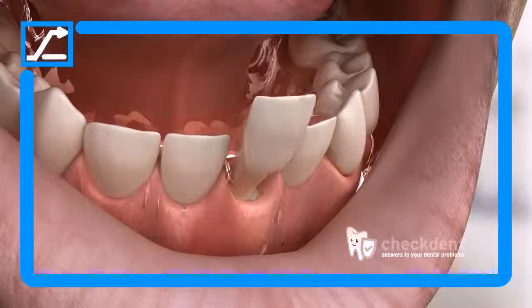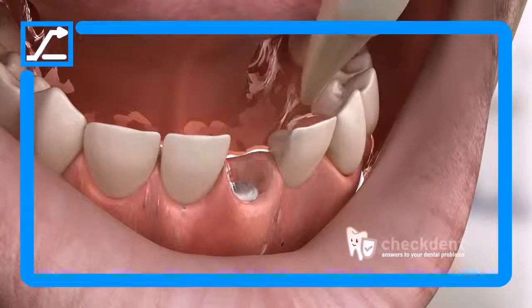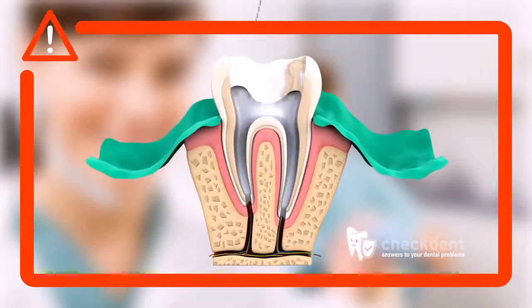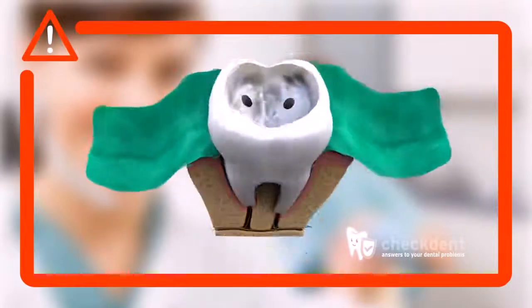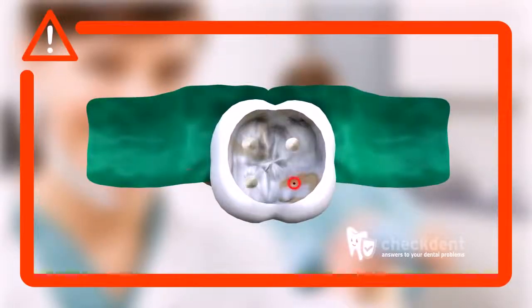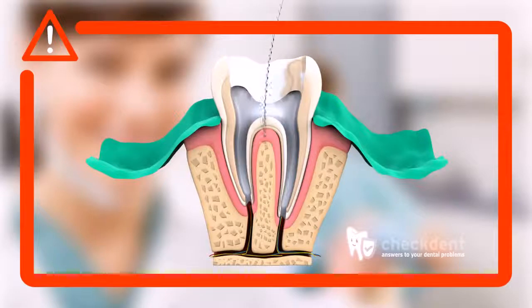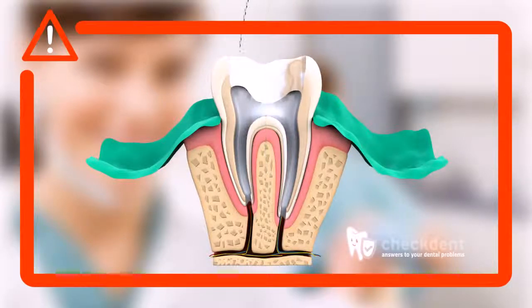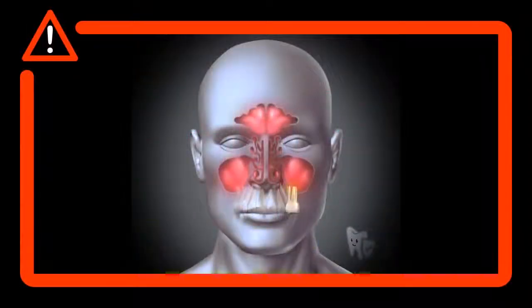The only alternative to a root canal treatment is tooth extraction. Prevention is the best alternative. The risks involved in a root canal treatment include the following: instrument breakage in the canal, root canals overlooked by the dentist who leaves them unfilled, perforation of the canal and the dental crown, and over-instrumentation with respective possible consequences such as maxillary sinusitis or bone inflammation.